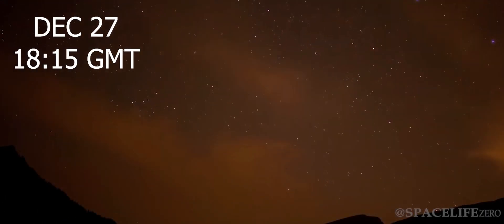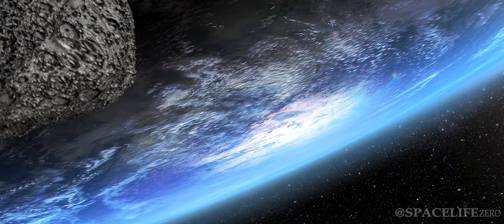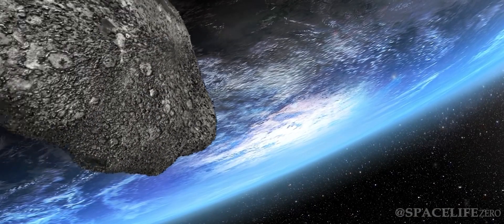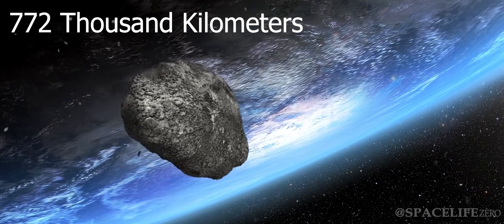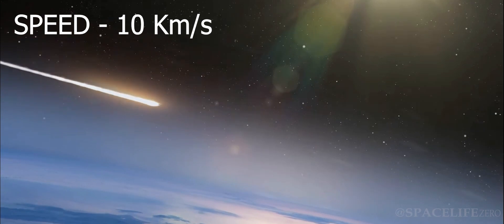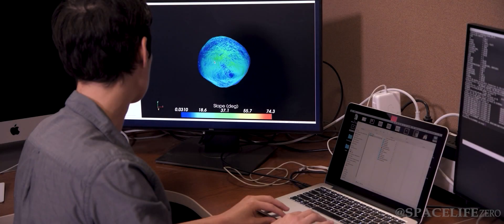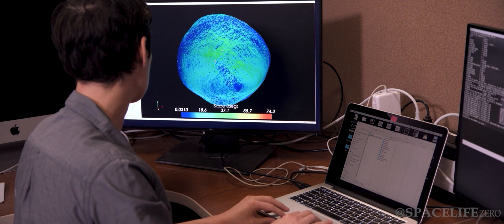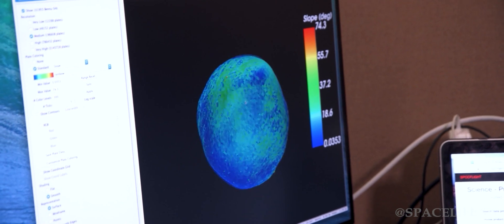On December 27 at 1815 GMT, the asteroid will fly past Earth at a very close distance of 772,000 km, at an incredible speed of 10 km per second. The researchers at NASA's JPL have confirmed that asteroid 2014 HK129 will not strike Earth in its current close approach.